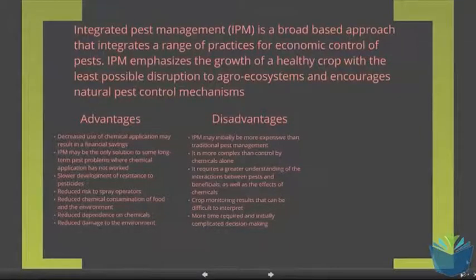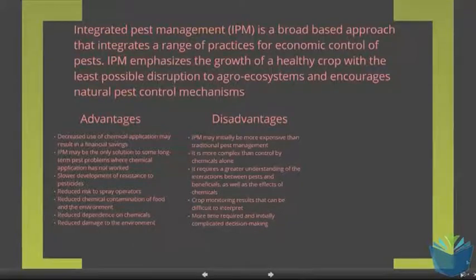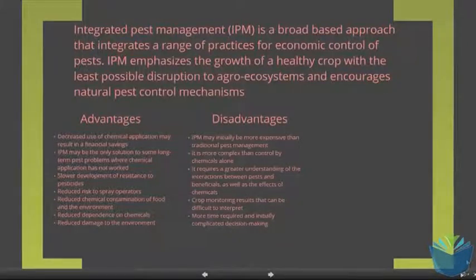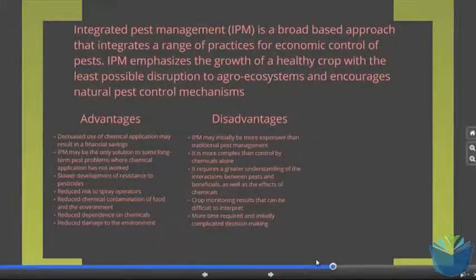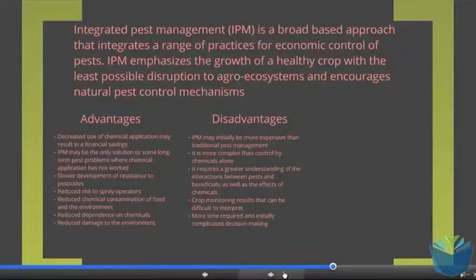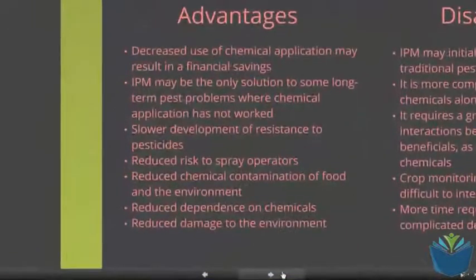This leads us to integrated pest management, or IPM. Essentially, this integrates practices from both biological controls and chemical controls. It uses the most effective systems it can to produce the highest yields at the lowest cost. Someone using IPM would use chemicals and biological controls together, usually done in unison.